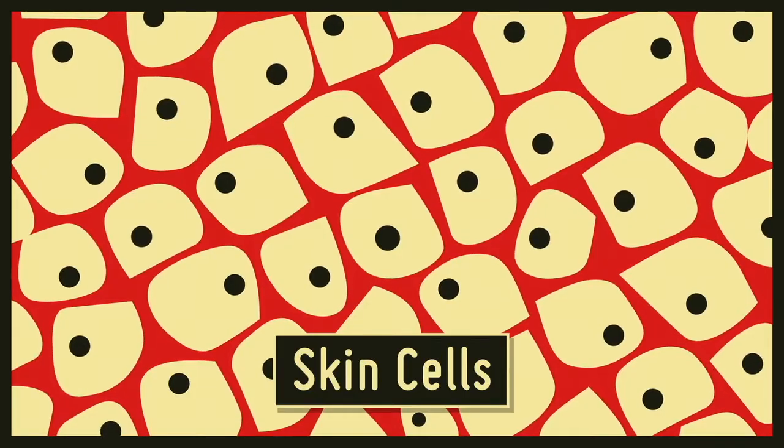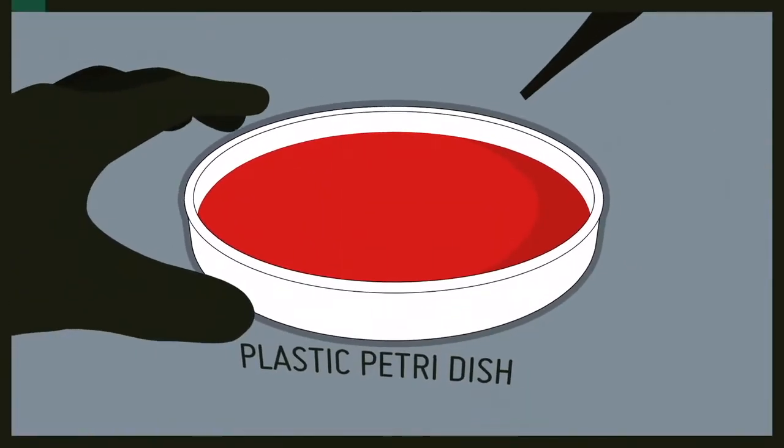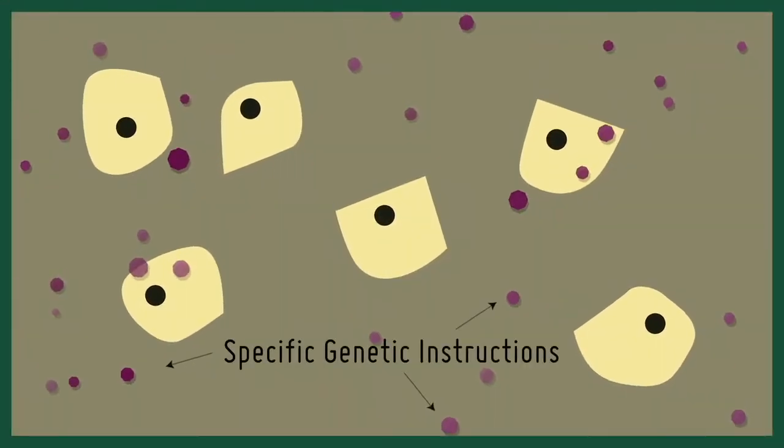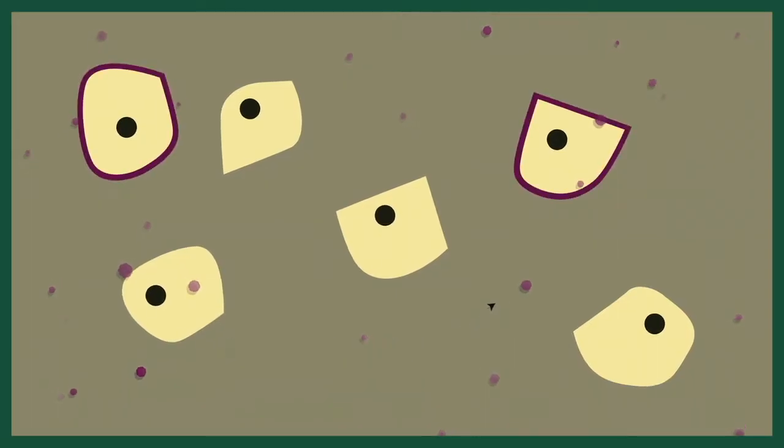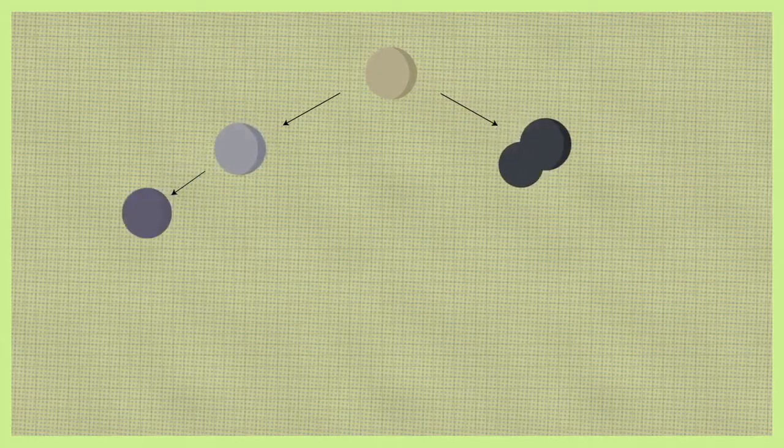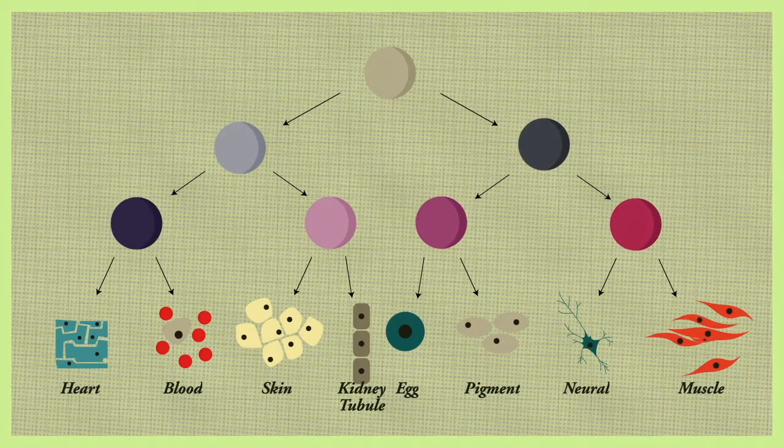However, if some adult cell types are taken, grown in plastic dishes and given specific genetic instructions, over time, a small number of these cells will reverse from their differentiated state and develop the ability to re-differentiate into any cell type in the body.